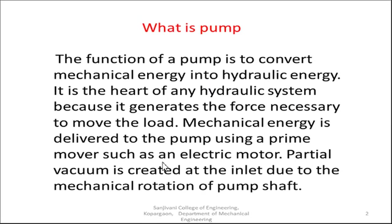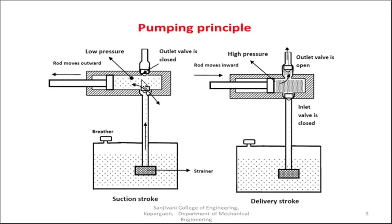To understand this, let us consider this figure, which explains the basic pumping principle. You can see that there is a reservoir, a strainer, and a reciprocating pump. As the rod moves outward, it creates suction at the inlet line — at that time the inlet valve is open and the outlet valve is closed, so the fluid gets drawn in. When the fluid has to be delivered to the output line, the inlet valve closes, the delivery valve opens, and the rod moves inward, pressurizing the fluid to the application area.